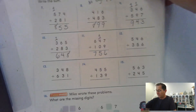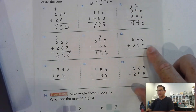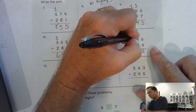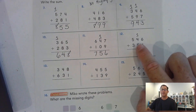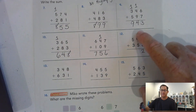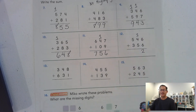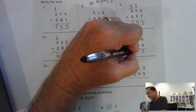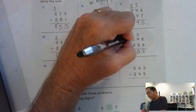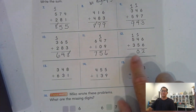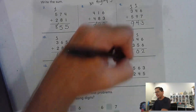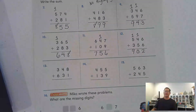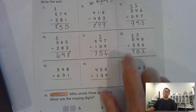Number twelve: six ones plus six ones is twelve ones — regroup as one ten and two ones. Five tens plus five tens is ten tens — ten tens is a hundred, so trade the ten tens for one hundred and zero tens. And the hundreds: five hundred, eight hundred, nine hundred. Nine hundred and two — hundreds, we don't have to regroup.